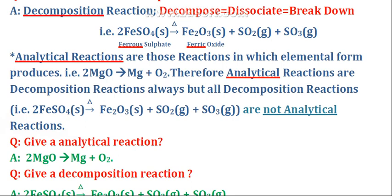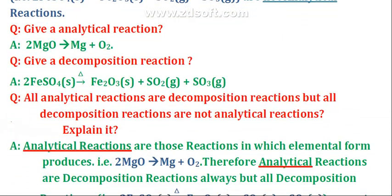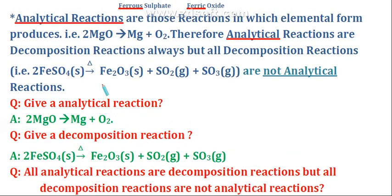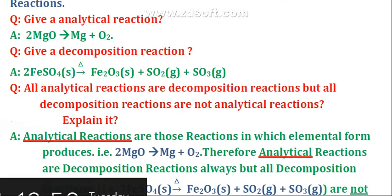All analytical reactions are decomposition reactions, but all decomposition reactions are not analytical. The decomposition of 2FeSO4 converting to Fe2O3 plus SO2 plus SO3 is not analytical, because Fe2O3 is in molecular form, SO2 is in molecular form, and SO3 is also in molecular form. If a single elemental molecule is present in the products, then that decomposition reaction will be called analytical. For example, 2MgO gives Mg plus O2 — this is an analytical reaction.